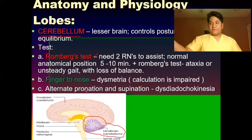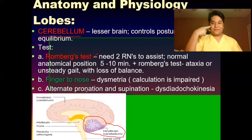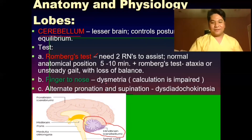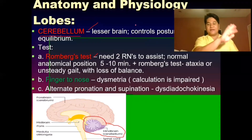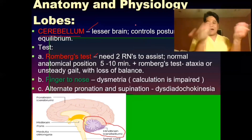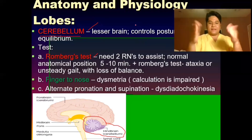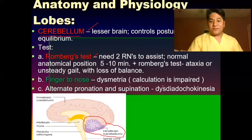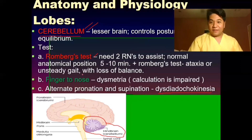Other cerebellar tests include the finger-to-nose test — if the patient misses the target, this is called dysmetria, indicating impaired calculation and cerebellar affectation. You can also do the alternate supination and pronation test — if the patient is unable to do it quickly, this is called adiadochokinesia, also indicating cerebellar affectation.